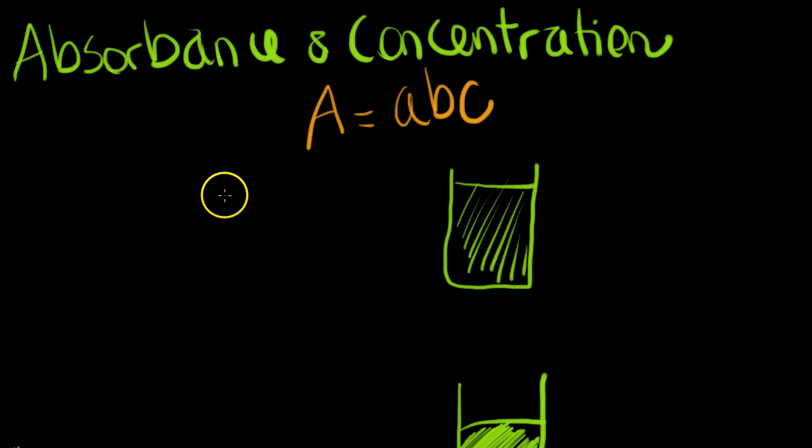Alright, absorbance and concentration in spectrophotometry. This is an application of Beer's Law, where the absorbance is equal to the absorptivity constant, which is determined for the analyte, times the path length of the light times the concentration.